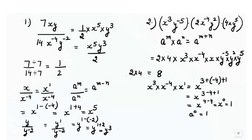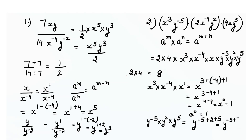We use the same rule for y: y raised to power minus 5 times y raised to power 2 times y raised to power 5 equals y raised to power minus 5 plus 2 plus 5, which equals y raised to power 2. So the final answer is 8 times 1 times y raised to power 2, which is 8y raised to power 2.